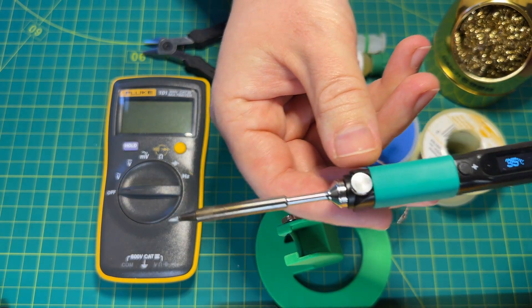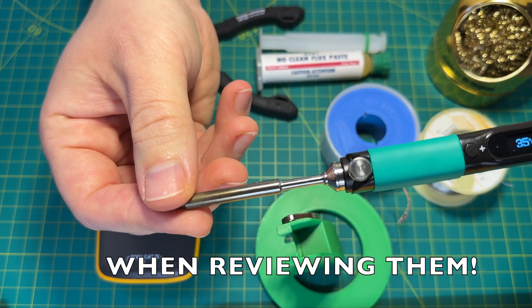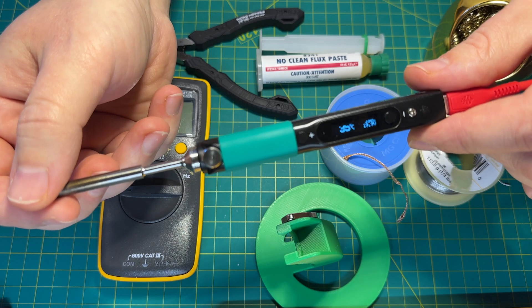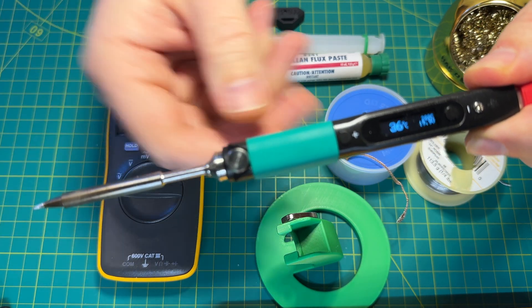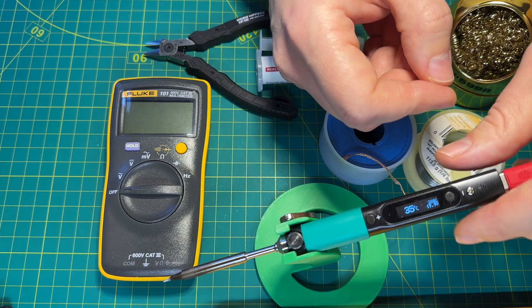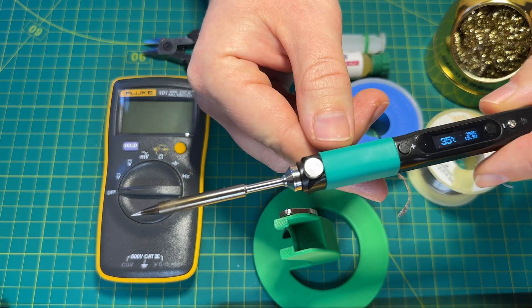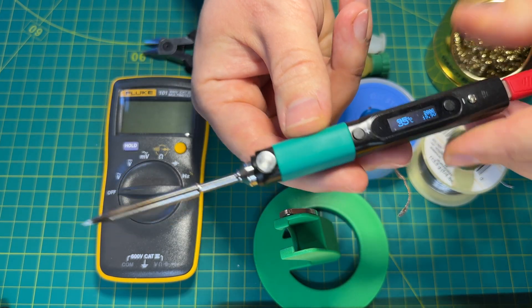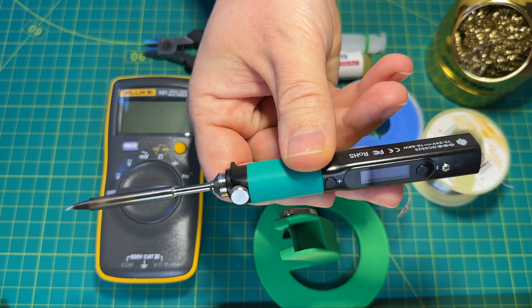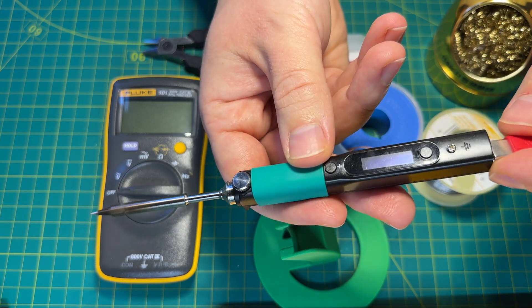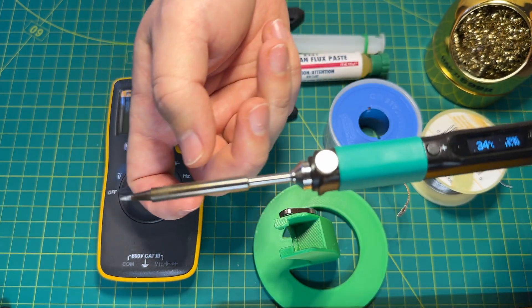Also, I noticed some YouTubers holding the soldering iron like this. Don't do that. Obviously, it's not heated right now, but develop good habits from the beginning. Hold the soldering iron properly. You don't want to get used to holding it by the tip, and if it's ever hot and might have been just turned off, so you don't know if it's hot or not, you don't want to accidentally grab the tip and burn yourself.